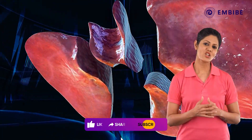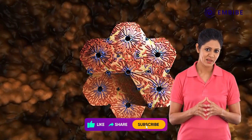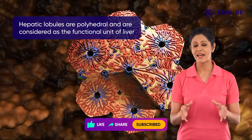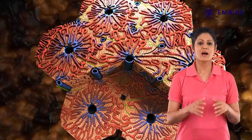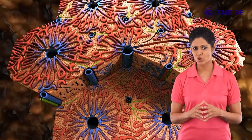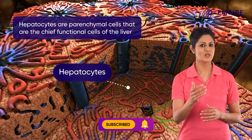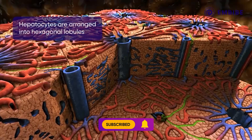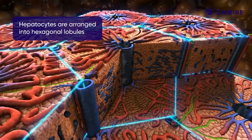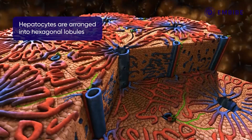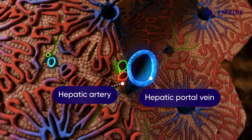A sectional view of the liver shows numerous polyhedral units called hepatic lobules, which are considered the functional units of the liver. A magnified view of the section shows hepatic cells or parenchymal cells known as hepatocytes.